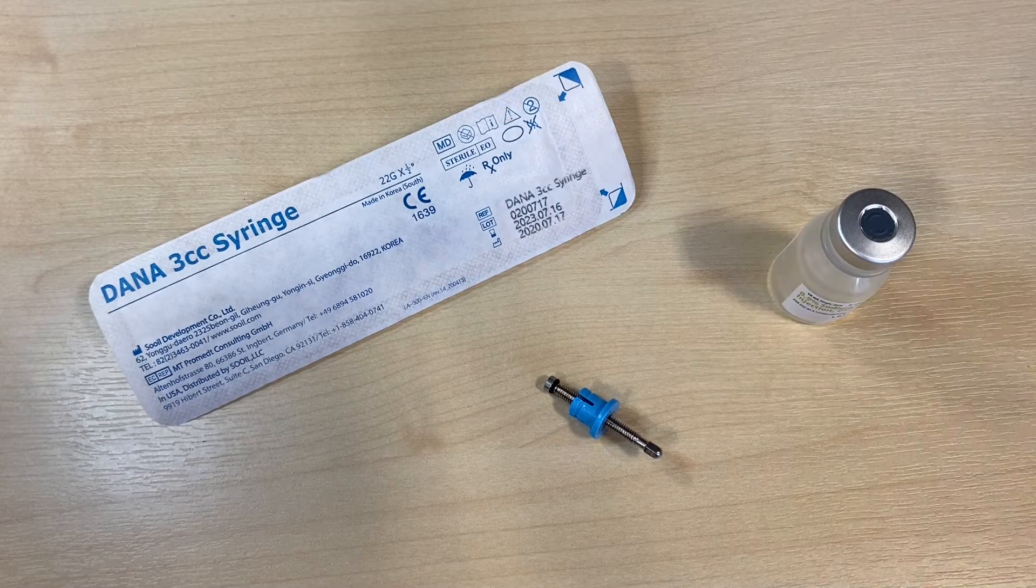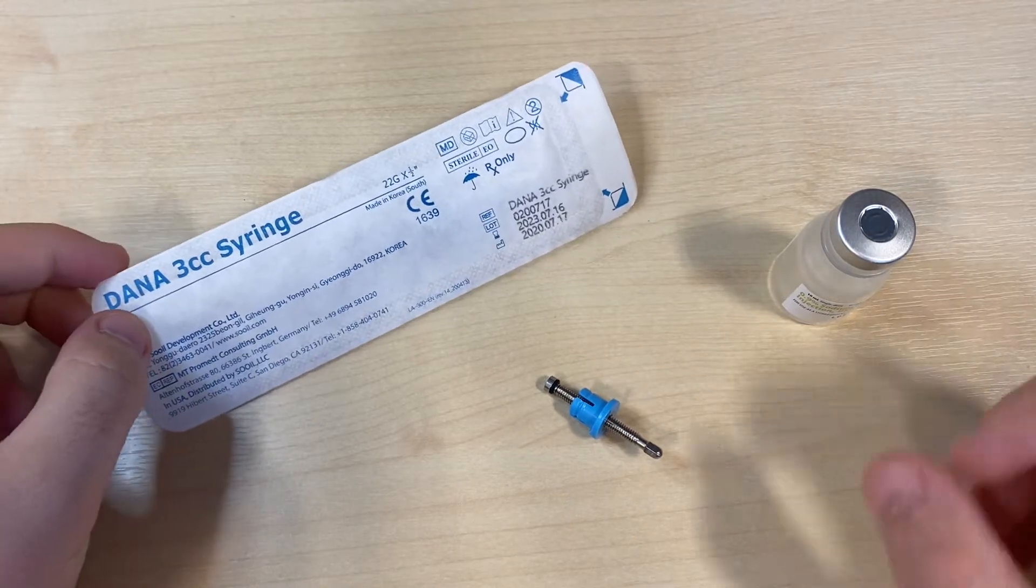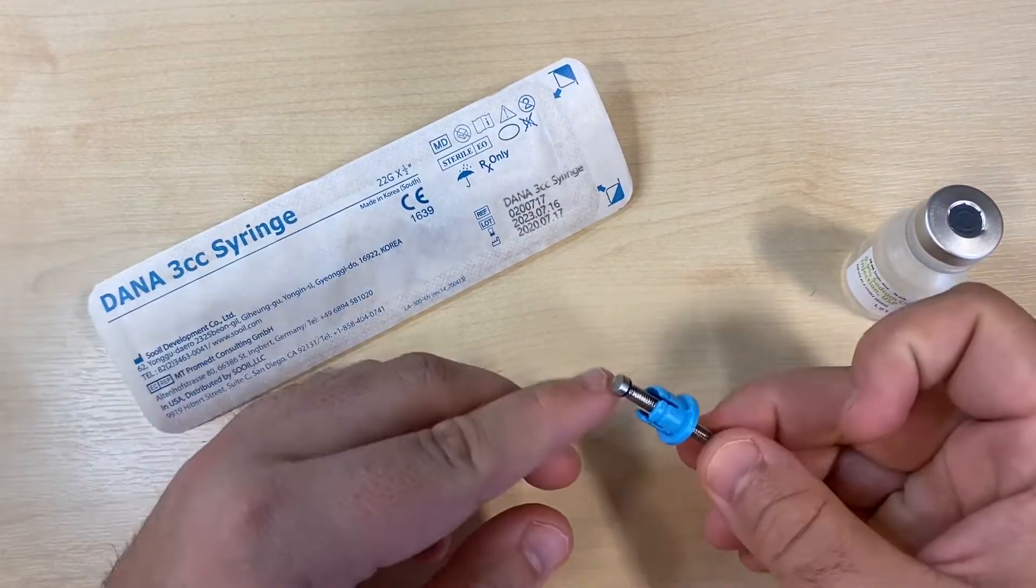Filling a Dana cartridge. You'll need your syringe, some insulin, and your linking screw.